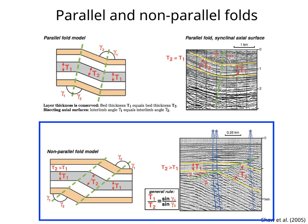In non-parallel folds, on the other hand, layer thickness changes across the structure. The axial surface is no longer the bisector of the interlimb angle, but the orientation of the axial surface is given by the equation in the figure. This is shown to the left in a diagram, and to the right in a non-vertically exaggerated seismic section in depth of an anticline with a thicker limb.